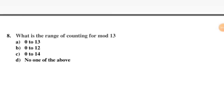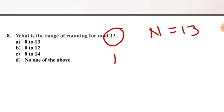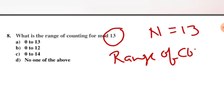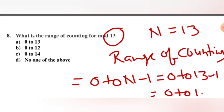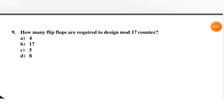Next question: what is the range of counting for a mod 13 counter? Mod 13 means the number of states that can be counted is 13, so capital N equals 13. The range of counting is 0 to N minus 1, which equals 0 to 13 minus 1, giving 0 to 12. B is the right option.